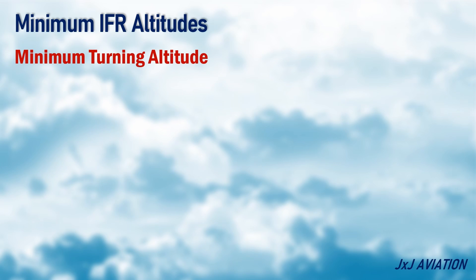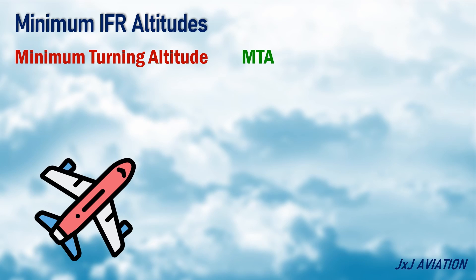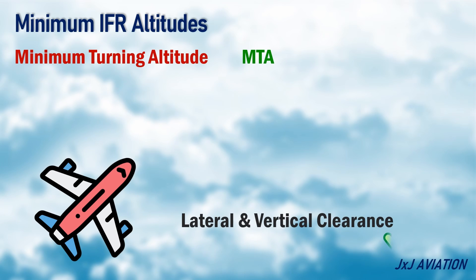Minimum Turning Altitude, MTA — this is the lowest altitude that ensures lateral and vertical obstacle clearance during turns over specific waypoints or NAV aids.